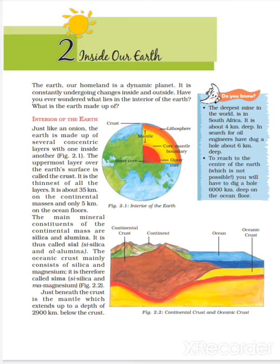The crust is the thinnest of all the layers. It is 35 kilometers thick in the continental masses and only 5 kilometers thick on the ocean floor. The main minerals in the continental masses are silicon and alumina.